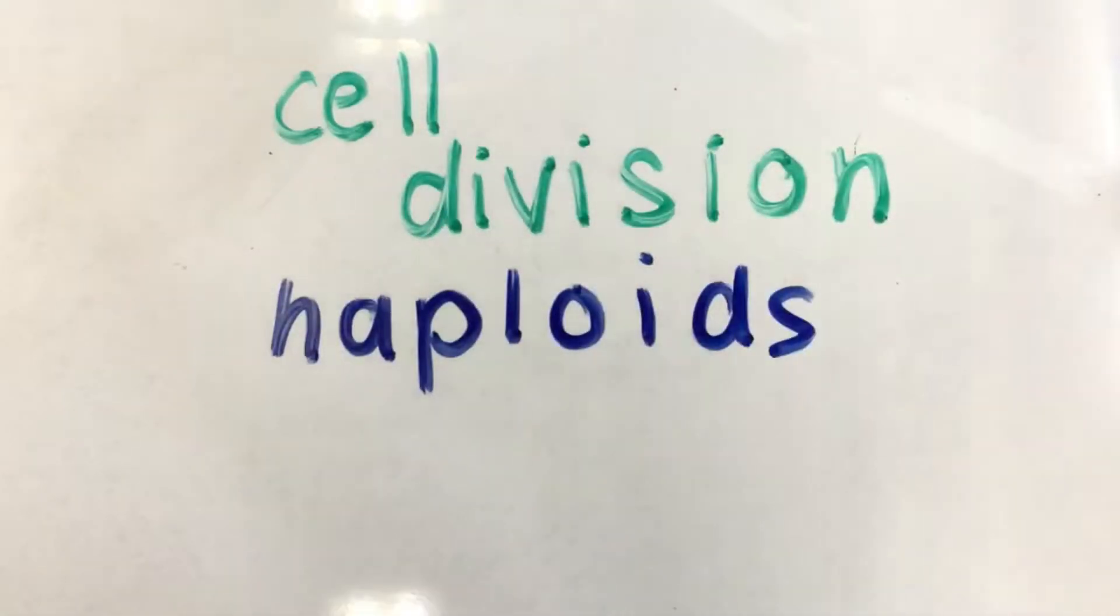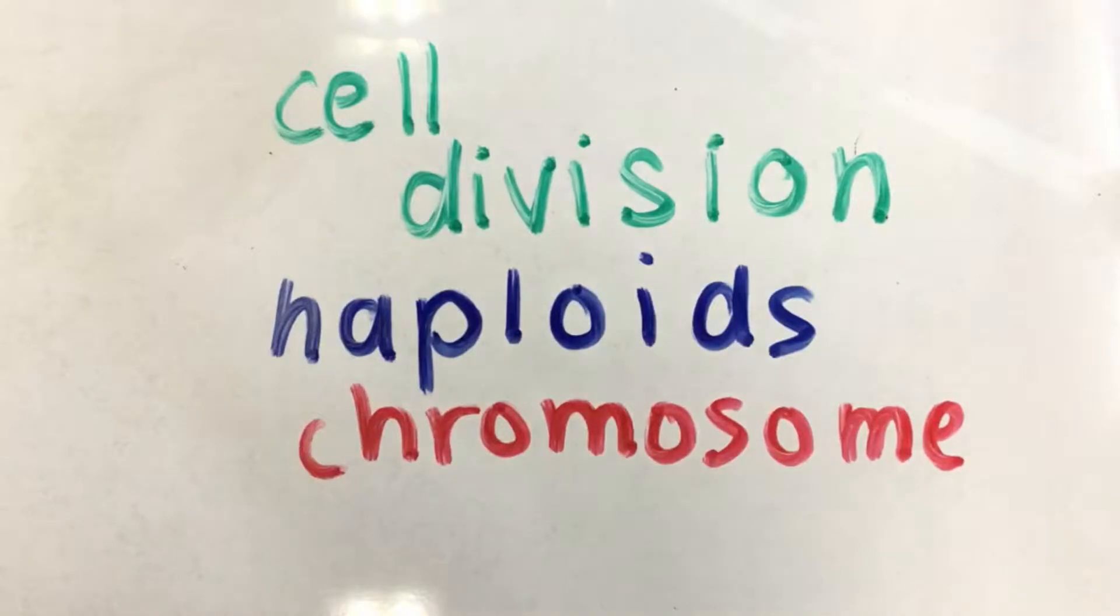But where do words like cell division, haploid, chromosomes, and genes come in? Well, it begins at a set of stages, the first being called prophase.